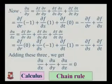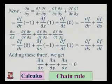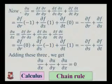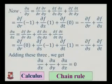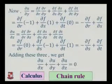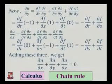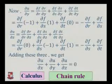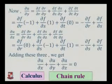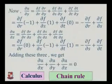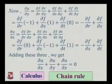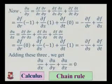Del u by del y equals del f by del r into del r by del y plus del f by del s into del s by del y plus del f by del t into del t by del y, which gives del f by del r into minus 1 plus del f by del s into 1 plus del f by del t into 0. So the result is minus del f by del r plus del f by del s.